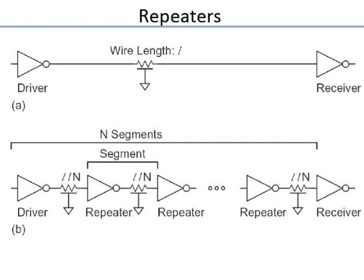To deal with this quadratic growth, people insert repeaters — inverters — at periodic distances. You insert N repeaters, break the wire into N equal-length segments, and place an inverter in front of each segment. The total delay then becomes N times the delay of a single segment.